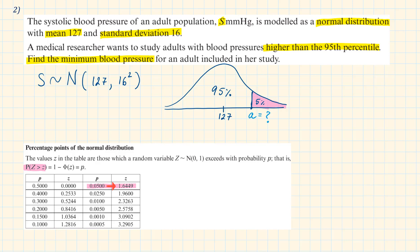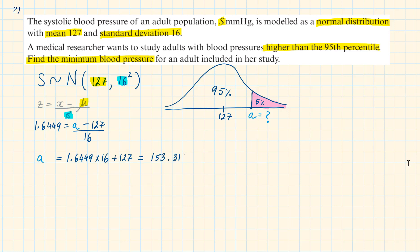Now that we have the z value we can use the formula to find x. Writing this out we have z = (x - μ)/σ. Replacing the values we have 1.6449 = (A - 127)/16. Rearranging this we have A is equal to 153 to 3 significant figures. We also need a conclusion.